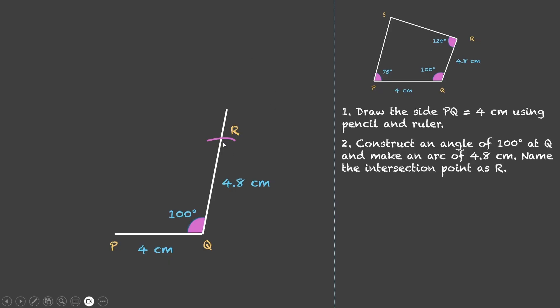Now we have two options. We can either make 120 degrees first or 75 degrees first. Let us start with R. Now we will construct an angle of 120 degrees at R using compass. 120 degrees is a standard angle. We can use compass for this.